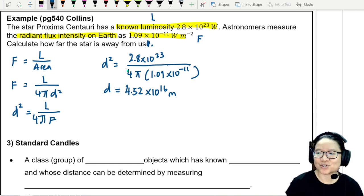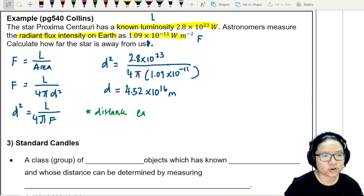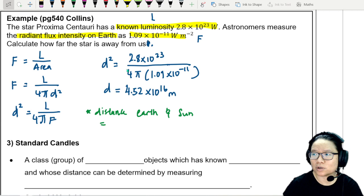So to give you context, distance between the earth and our good old sun, Sol, is equal to 1.5 × 10⁹ meter. So this star, Proxima Centauri.